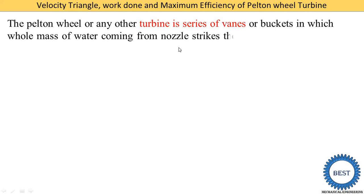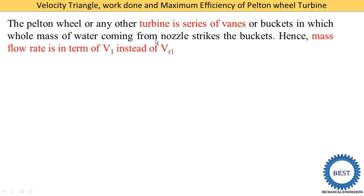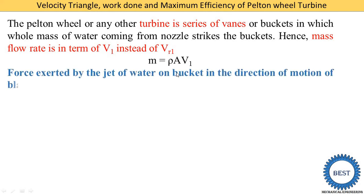For the mass flow rate: in a Pelton wheel turbine there is a series of buckets, and all the water mass from the nozzle continuously contacts the buckets. Therefore mass flow rate is expressed in terms of V1, not VR1. So mass equals rho times A times V1. The force exerted by the jet on the bucket in the direction of motion, derived earlier for series of plates, is: FX equals rho*A*V1*(VW1 plus or minus VW2).